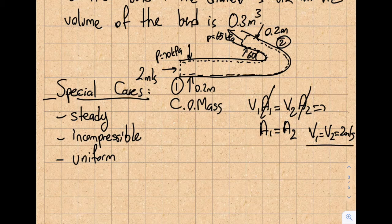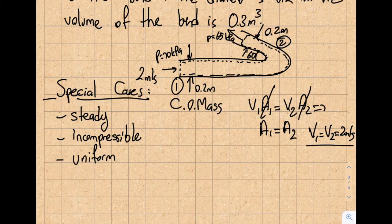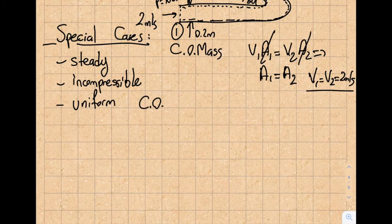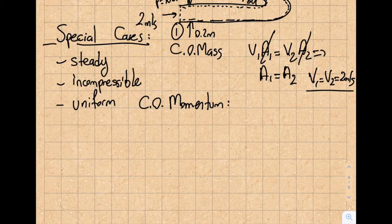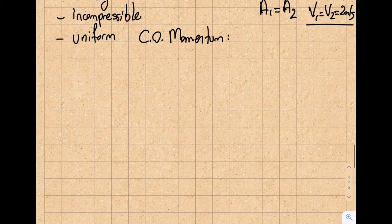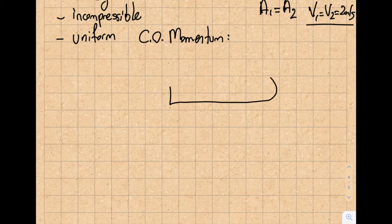I also need to use conservation of momentum — that's the relationship that gives me an equation for the forces. Since the question asks for horizontal and vertical components, I'll apply momentum in both the x and y directions. I'll start by drawing the free body diagram of the control volume.